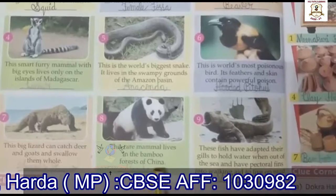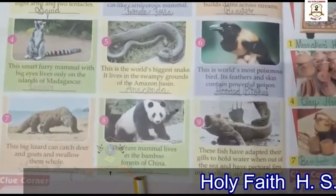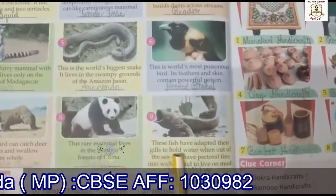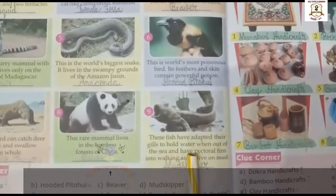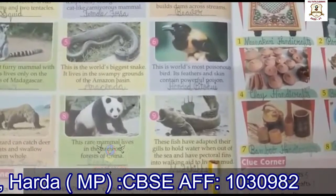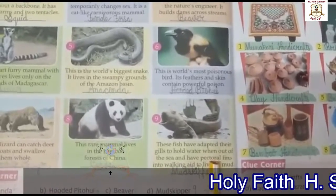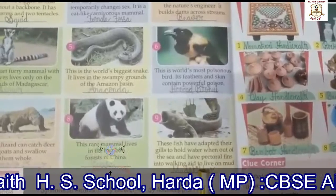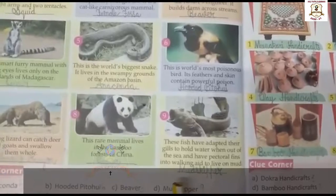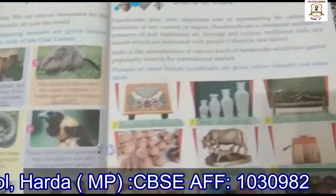Now the eighth one: this rare mammal lives in the bamboo forest of China. The name of this animal is panda. Now the ninth: this fish has adapted its gills to hold water when out of the sea, and has pectoral — meaning connected with the chest of a fish or animal — fins for walking, to live on mud. The name of this animal is mud skipper.